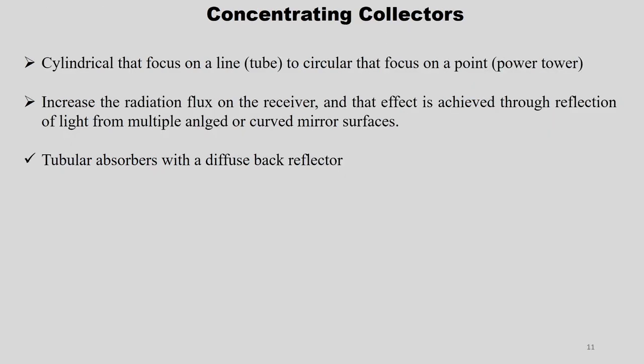There are various types of concentrating collectors; we will cover about 8 or 9 here, with more designs available in the references. They range from cylindrical types that focus on a line — the absorber tube — to circular types that focus on a point such as a power tower. The increase in radiation flux on the receiver is achieved through reflection of light from multiple angled and curved mirror surfaces.